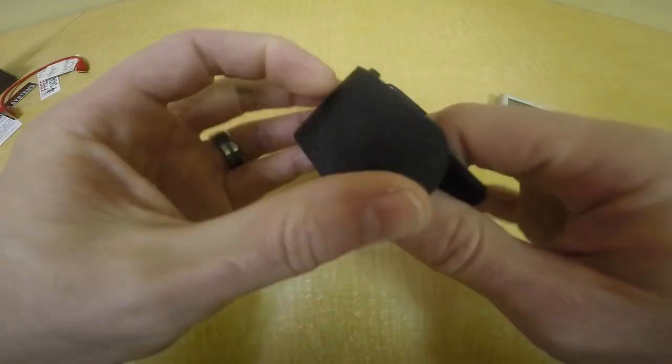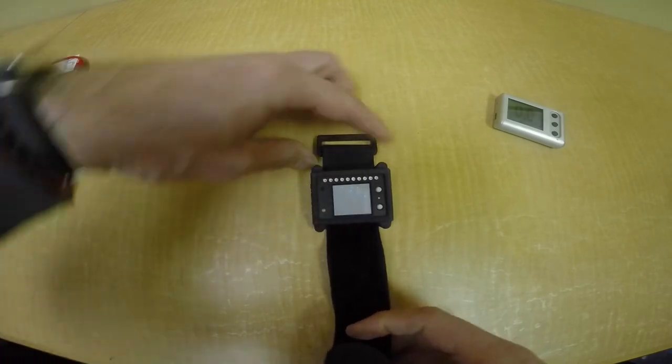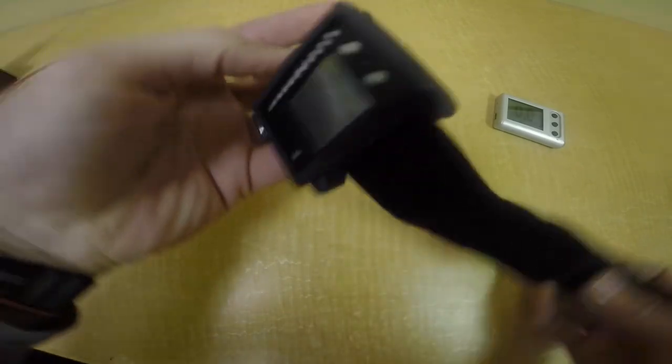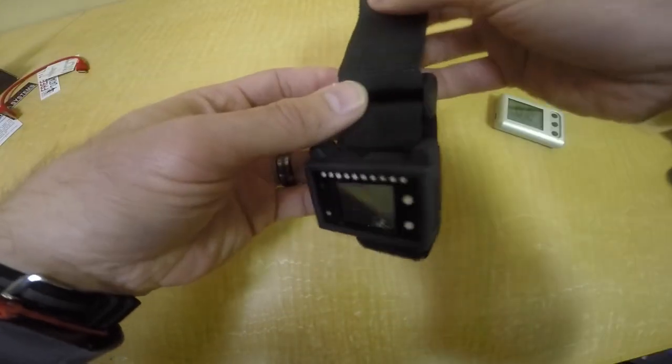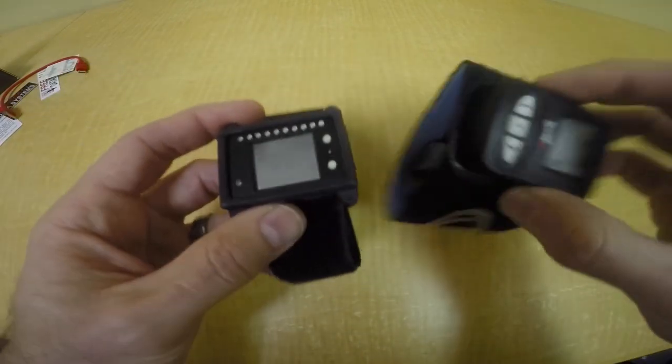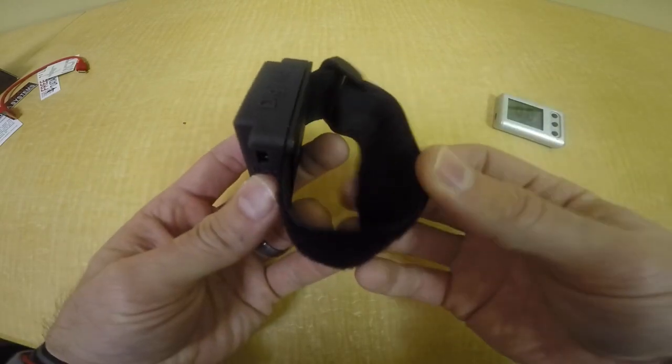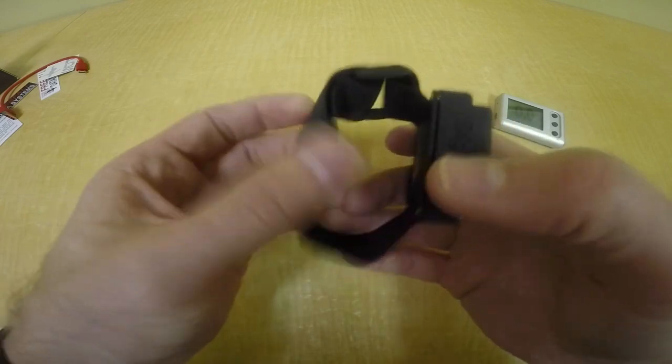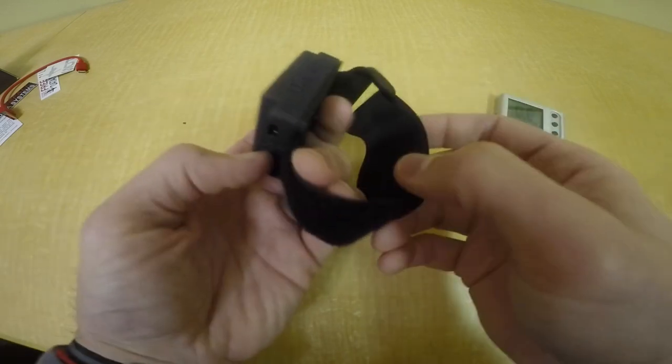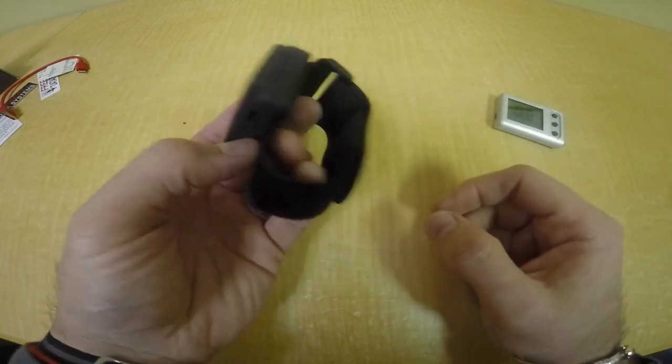Wrist mount, Velcro. There it is. So you can wear it over your suit or bare skin. I would like to see an elastic wrist mount, something kind of like this. That would be cool. I know these Velcro straps can be a little bit uncomfortable because they're a little bit stiff. But really, you can just wrap it around over your suit or whatever.